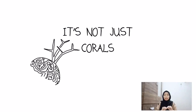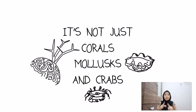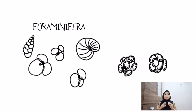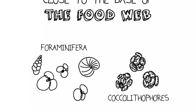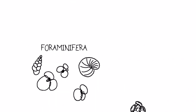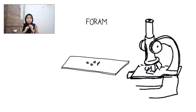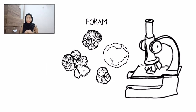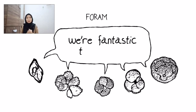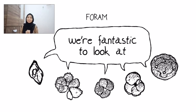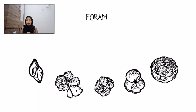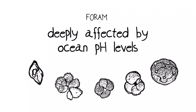It turns out that it's not just corals, mollusks, and crabs that are affected. Single-cell organisms called foraminifera and coccolithophores, which are close to the base of food webs and terribly important in marine ecosystems, are among the most affected. If you put a foraminifera under a microscope, they look like little spirals and fan-shaped webs — they are fantastic things to look at. Foraminifera are like little single-cell amoebae that make shells, and they are deeply affected by pH levels in the oceans.